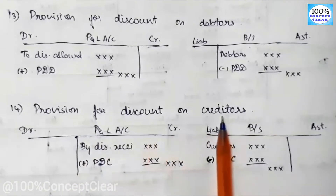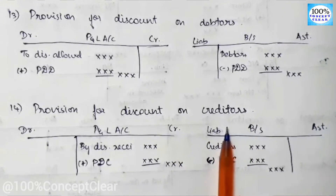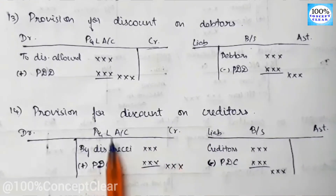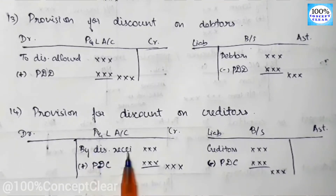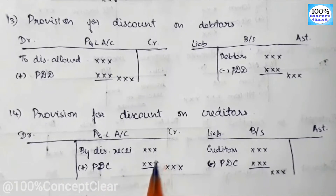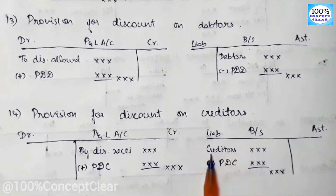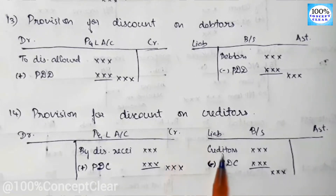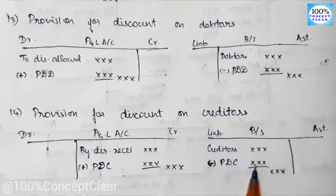The next adjustment is provision for discount on creditors. When we pay cash to our creditors, they may offer us a discount — that discount is our income. So provision for discount on creditors appears in the P&L account on the credit side. We add the discount on creditors to the trial balance amount. On the balance sheet, we minus the provision for discount on creditors from the creditors amount.